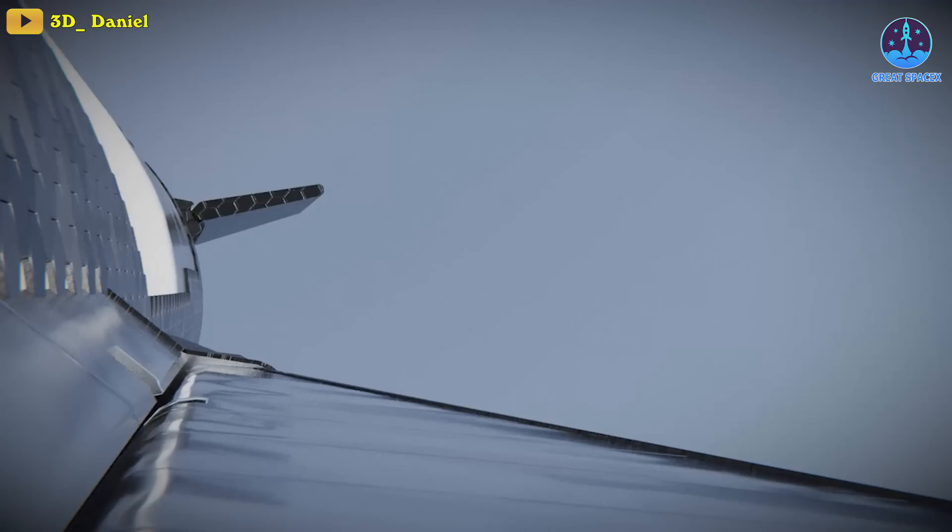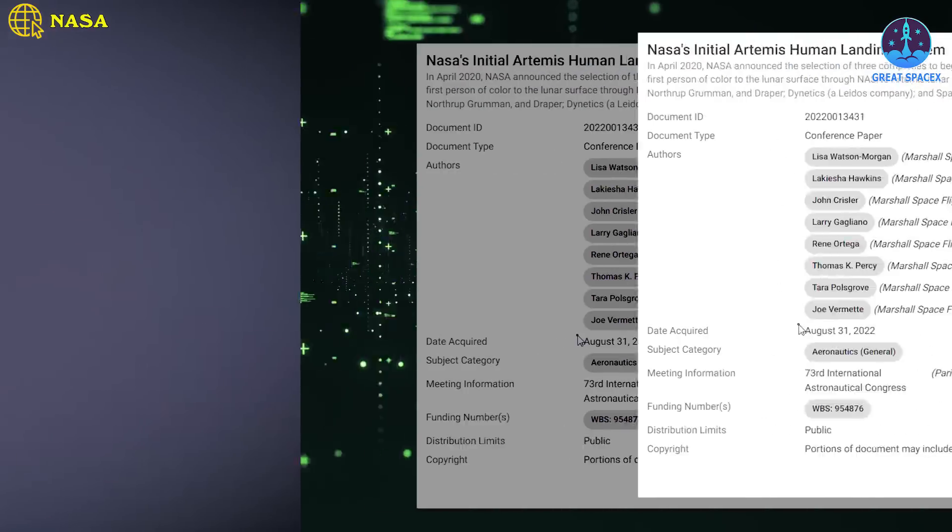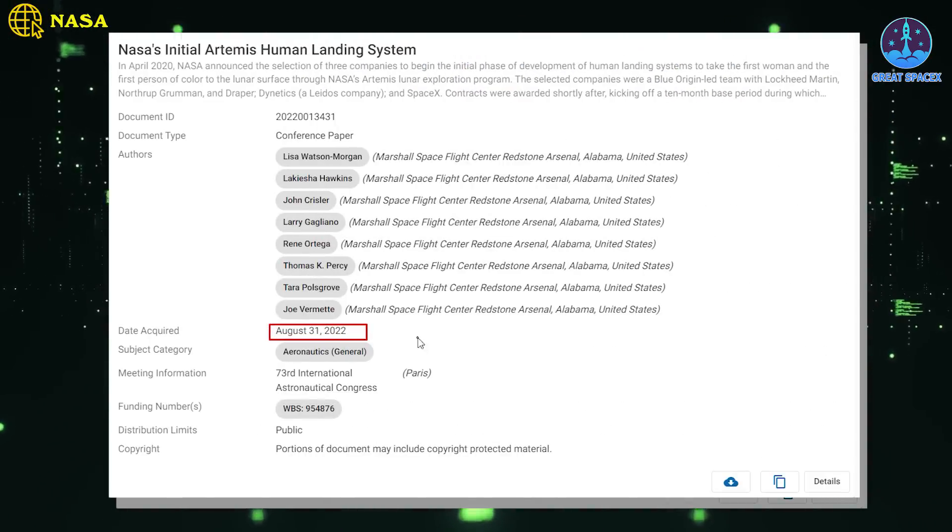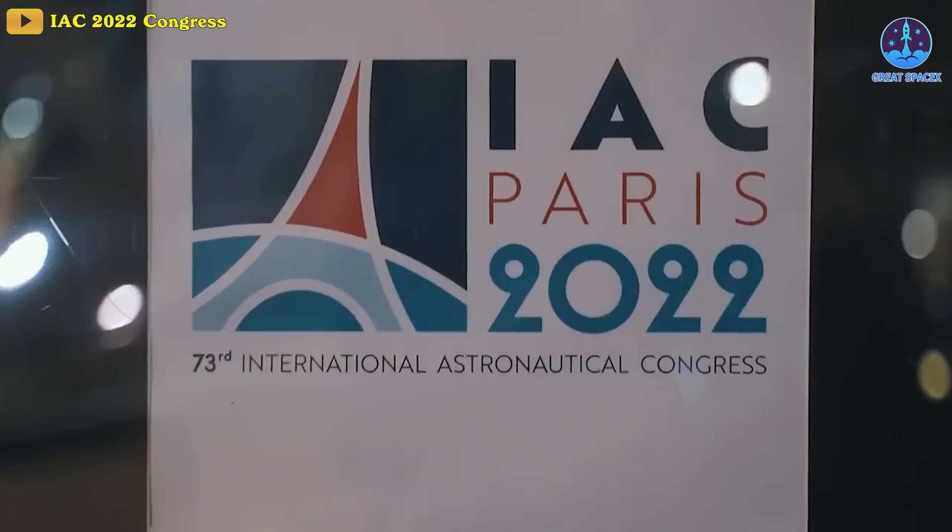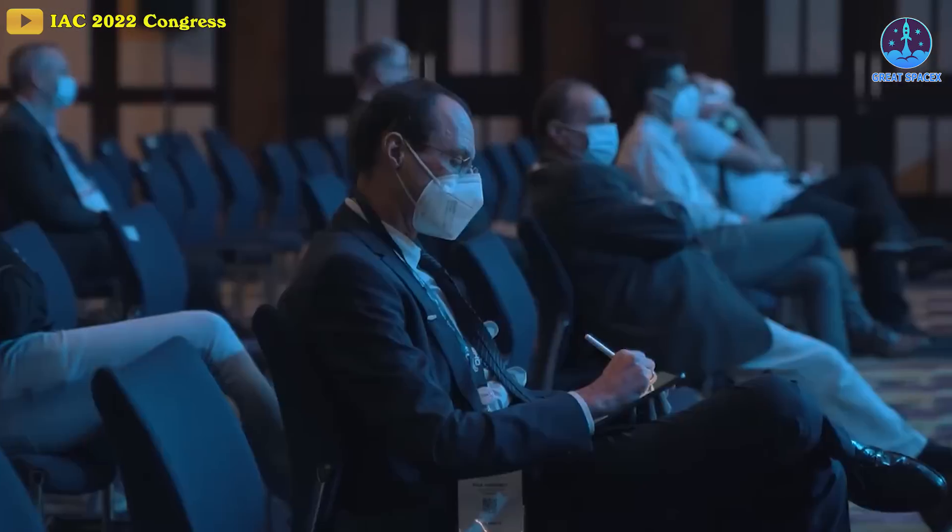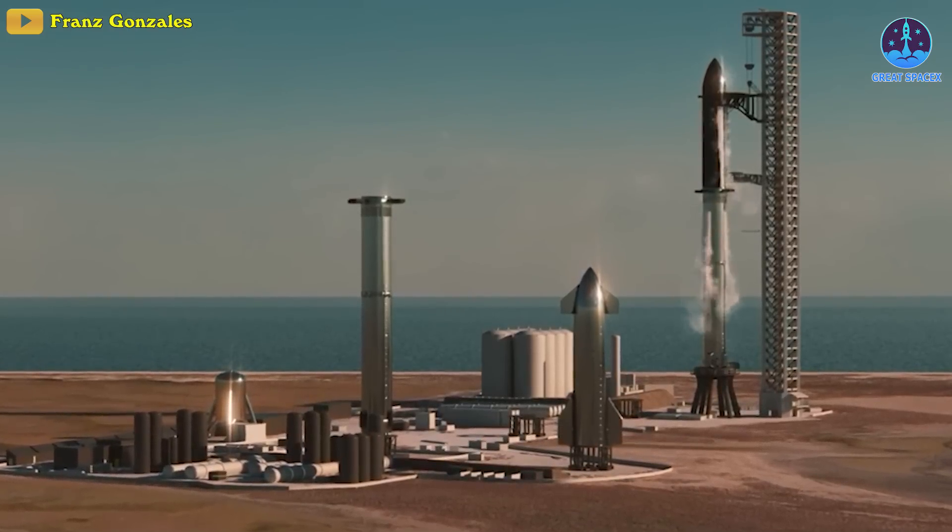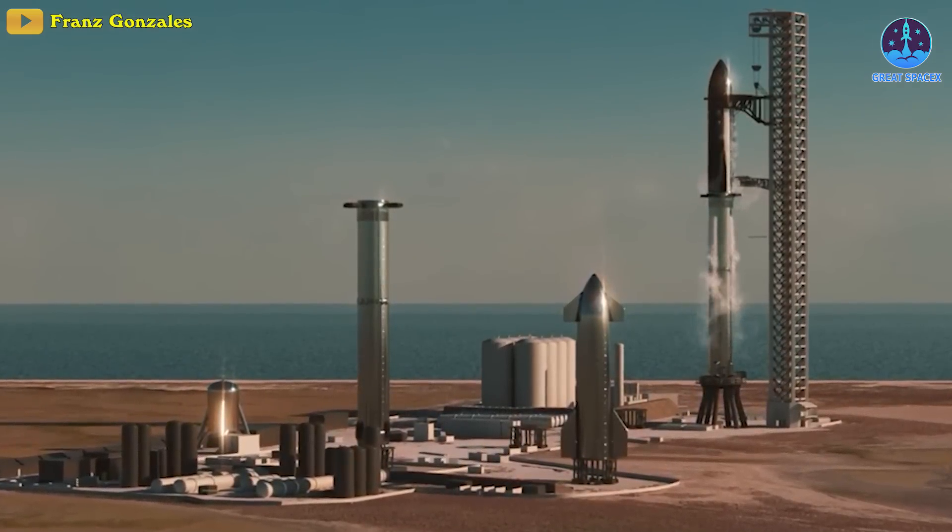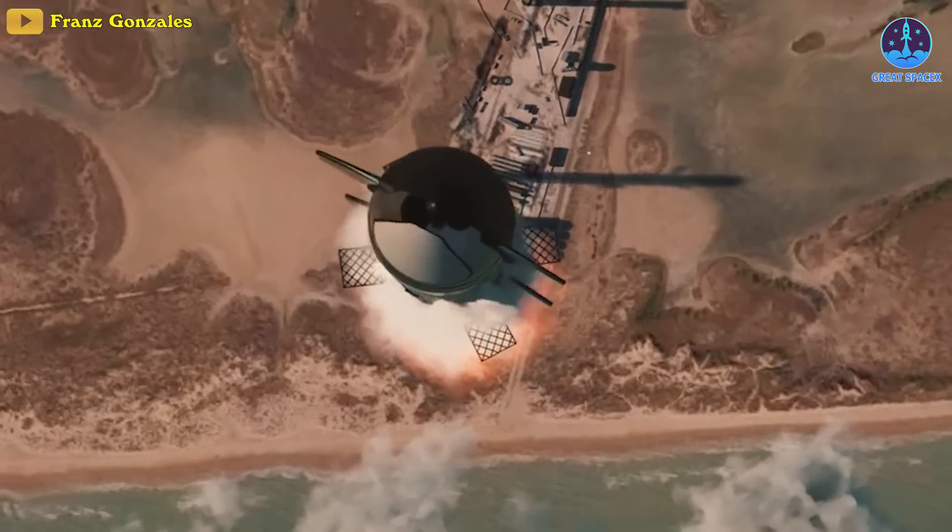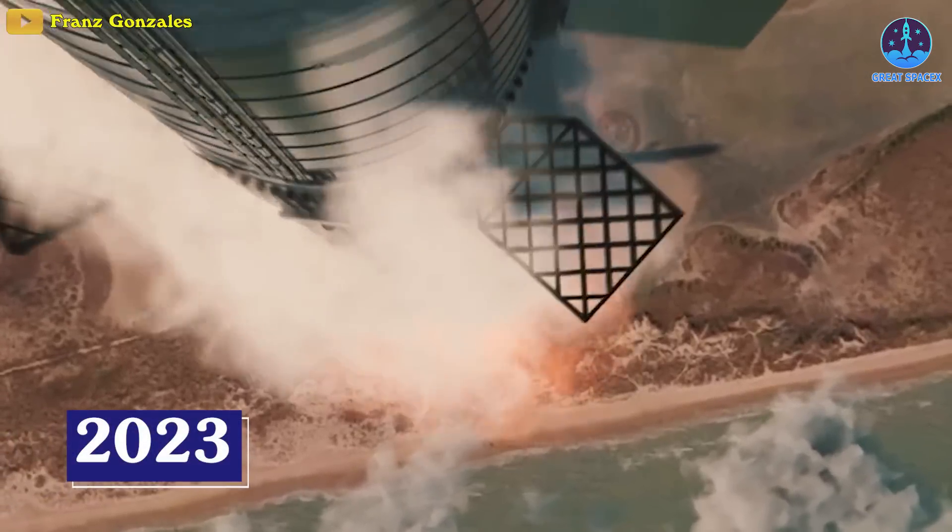This, according to the space agency, will come next year. The paper was posted on NASA's technical reports server in August, and since it addresses IAC's conference for this year, it can be reasonably inferred that the wording suggests that the first Starship orbital flight will take place in 2023.